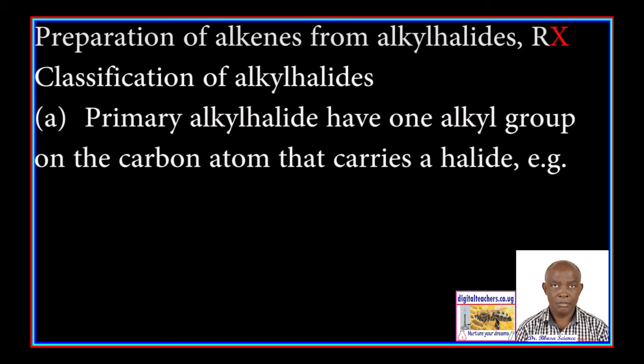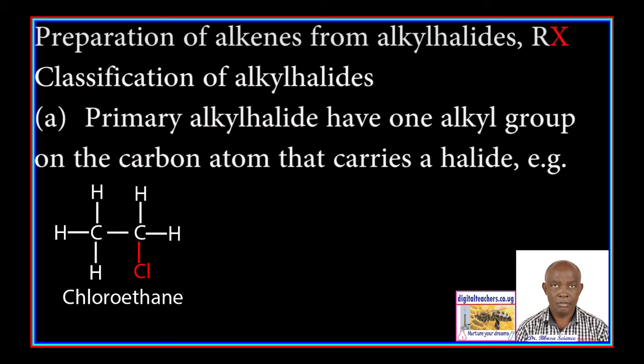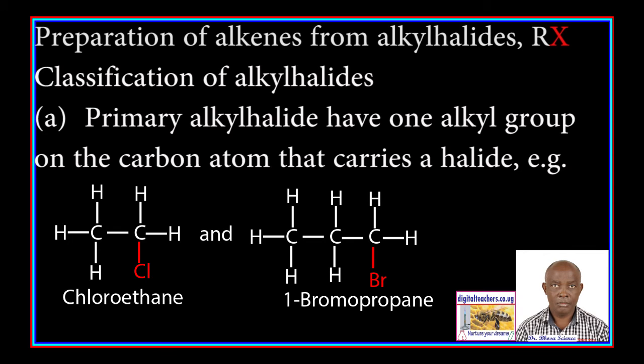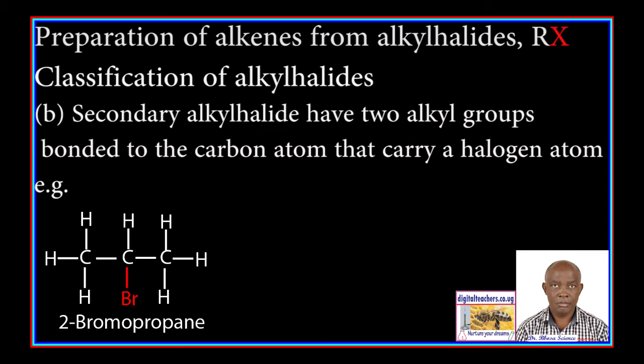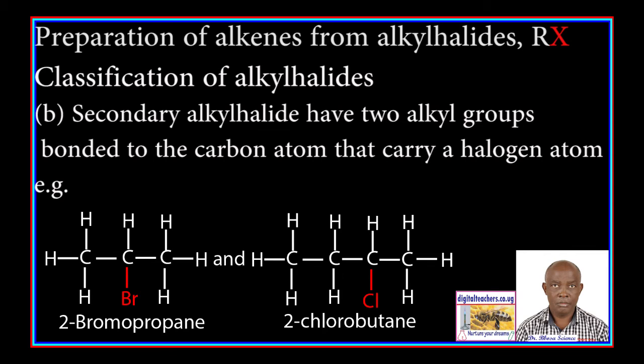Primary alkyl halides have one alkyl group bonded to the carbon atom that carries the halide. For example, chloroethane and 1-bromopropane. Secondary alkyl halides have two alkyl groups bonded to the carbon atom that carries the halogen atom. For example, 2-bromopropane and 2-chlorobutane.